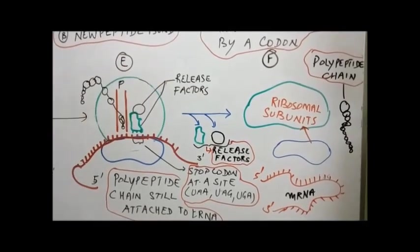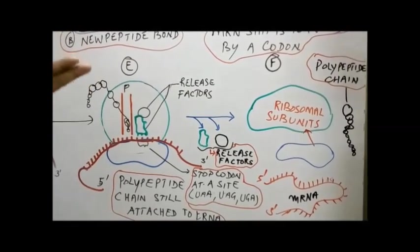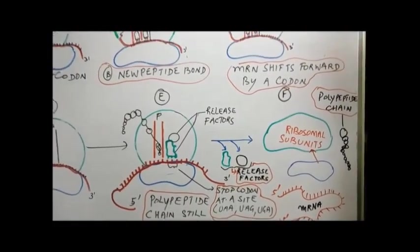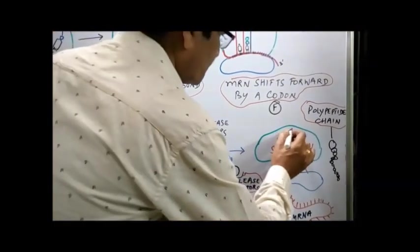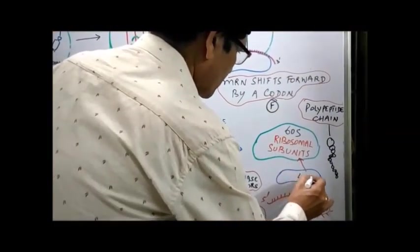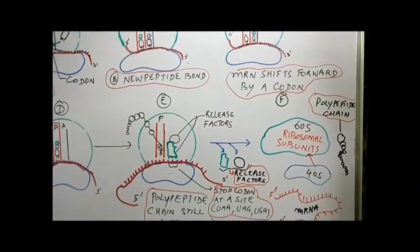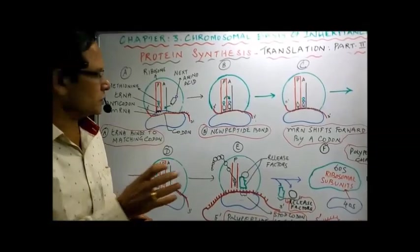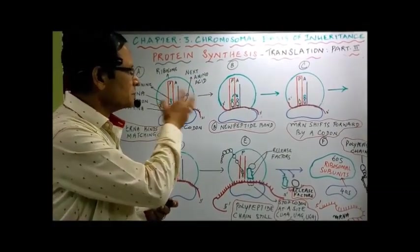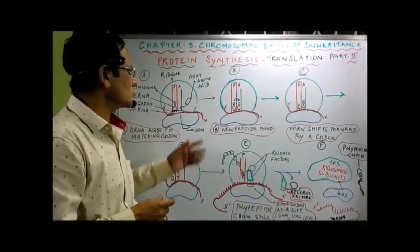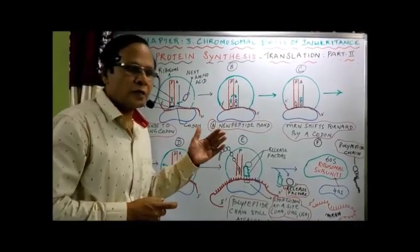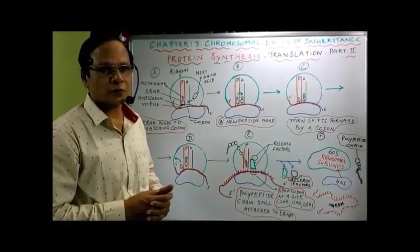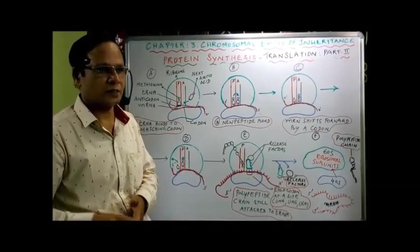Finally, the two subunits get separated. In eukaryotes we have the large subunit of 60S and the smaller subunit of 40S. These are the two subunits that dissociate. So that is the end of protein synthesis. In the next class we will go for what is called alternative splicing and other related topics.